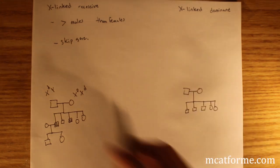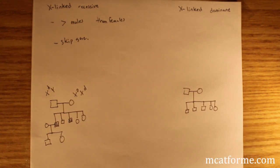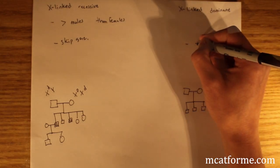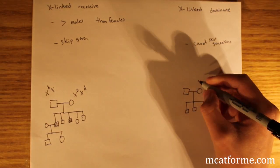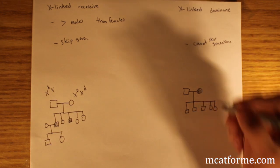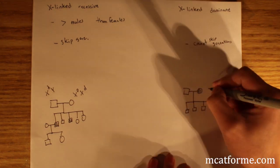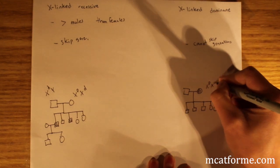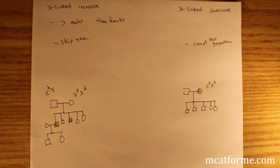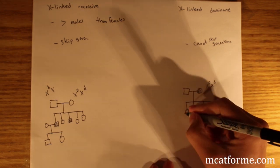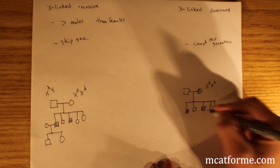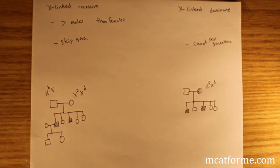We contrast that with X-linked dominant. We still see that more males are going to have the disease than females, but it cannot skip generations. So if the mom has the disease and it's X-linked dominant, anytime you have one copy of the dominant disease gene, you'll have the disease. In this case, the two sons have the disease, and it has to go through every single generation.